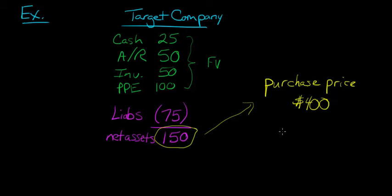So now what we do is we take the purchase price of $400 and we subtract out this $150. So this is the value of the net assets, and this is what we pay. So we're just taking what we pay, subtracting the net assets. And then the balance, this is $250. And that $250 is goodwill.